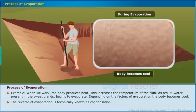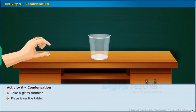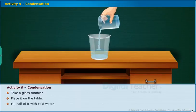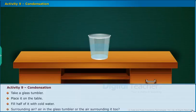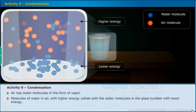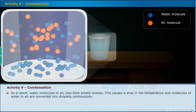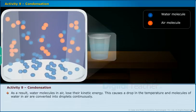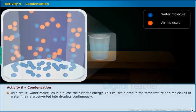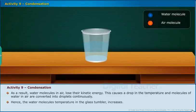Let us learn about condensation in detail. Take a glass tumbler, place it on the table and fill half of it with cold water. The temperature of the cold water is lower than the temperature of the surrounding air. Air has water molecules in the form of vapor. Molecules of water in air with higher energy collide with the water molecules in the glass tumbler with lower energy. As a result, water molecules in air lose their kinetic energy, causing a drop in temperature, and molecules of water in air are converted into droplets continuously. Hence the temperature of water molecules in the glass tumbler increases.